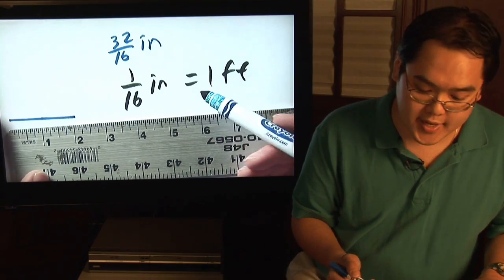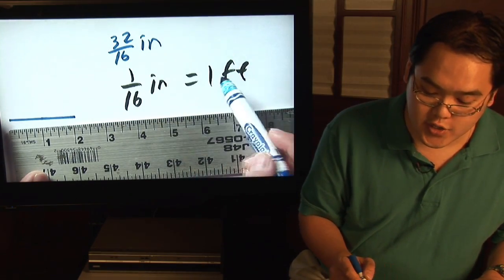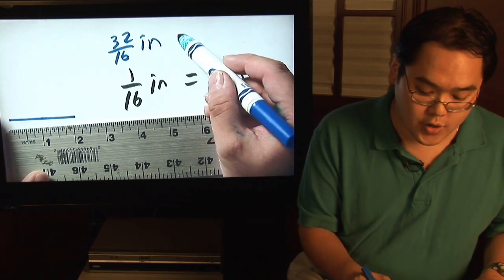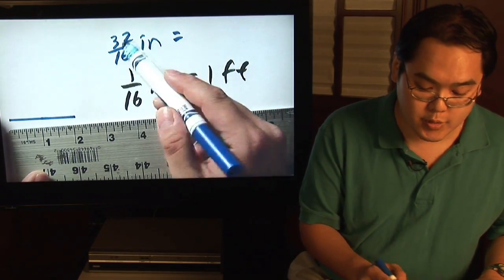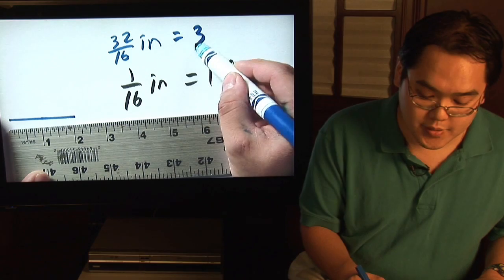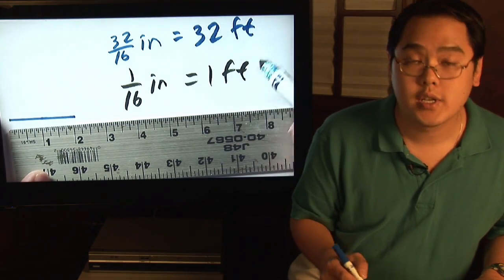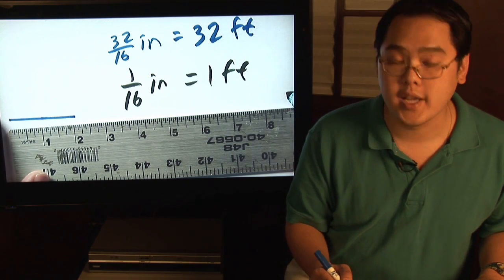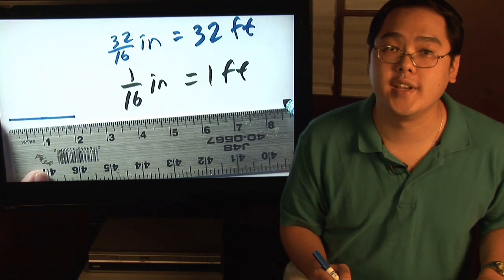To figure out how many actual feet that is, if one sixteenth of an inch is equal to one foot and you have thirty-two sixteenths inches, then all you need to do is multiply both sides by thirty-two. So that means that your actual model, if it is indeed going to be thirty-two sixteenths inches, is going to be thirty-two feet.